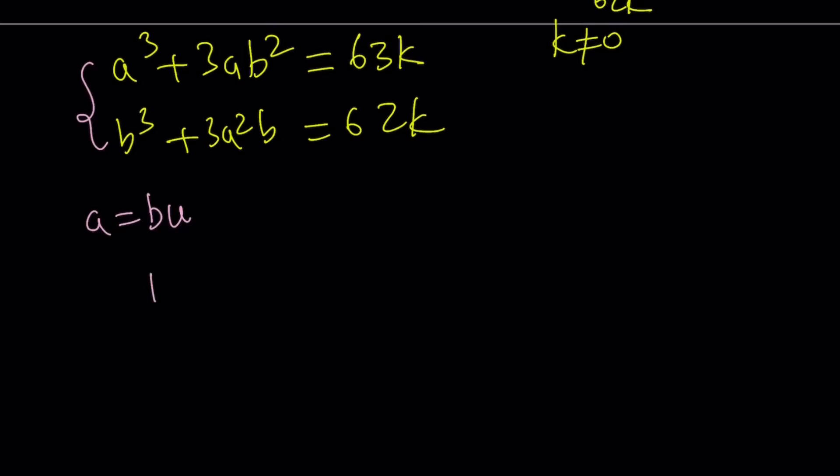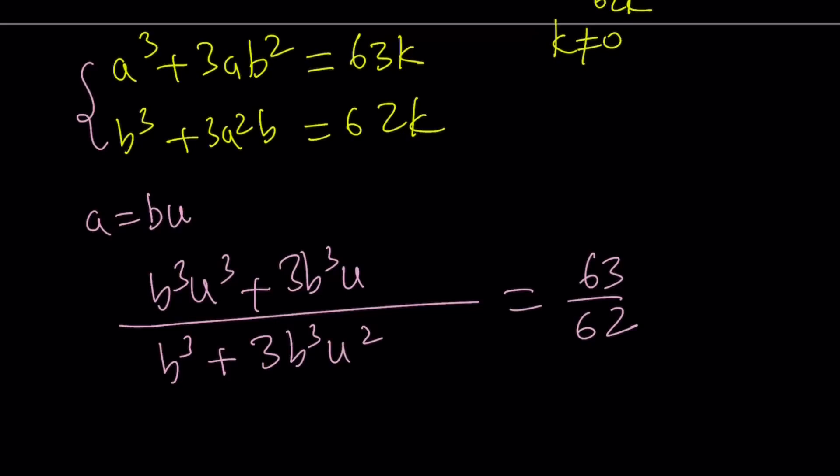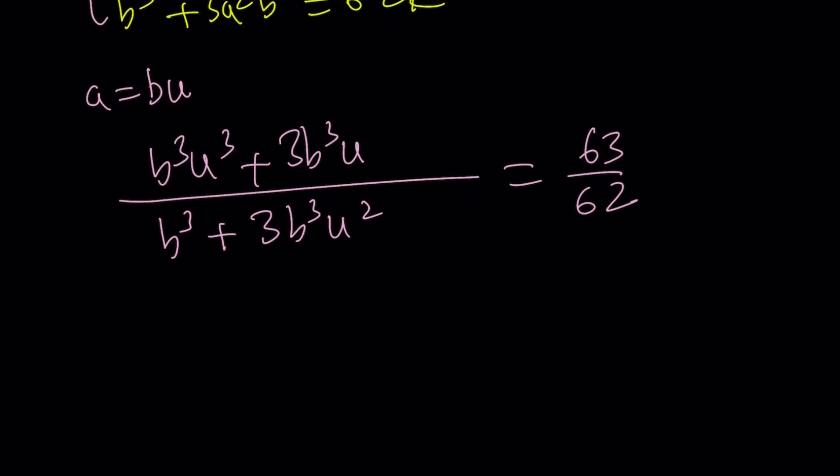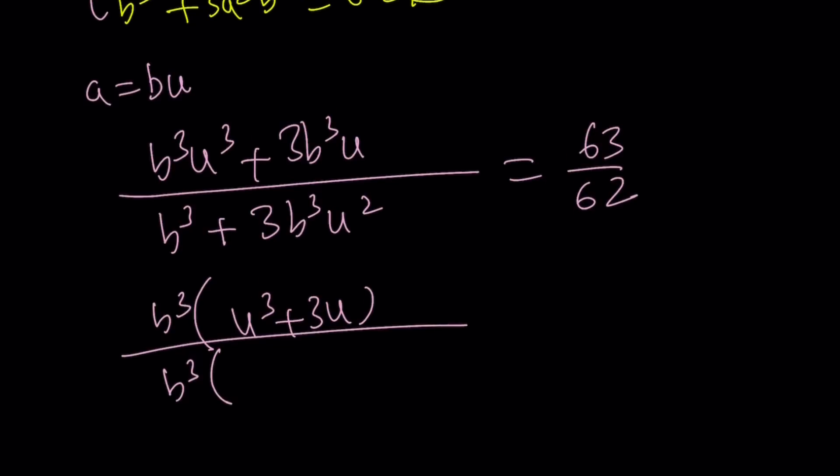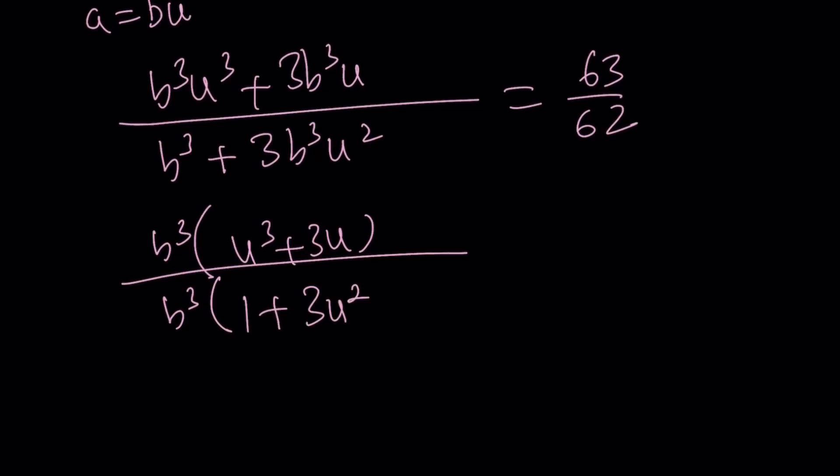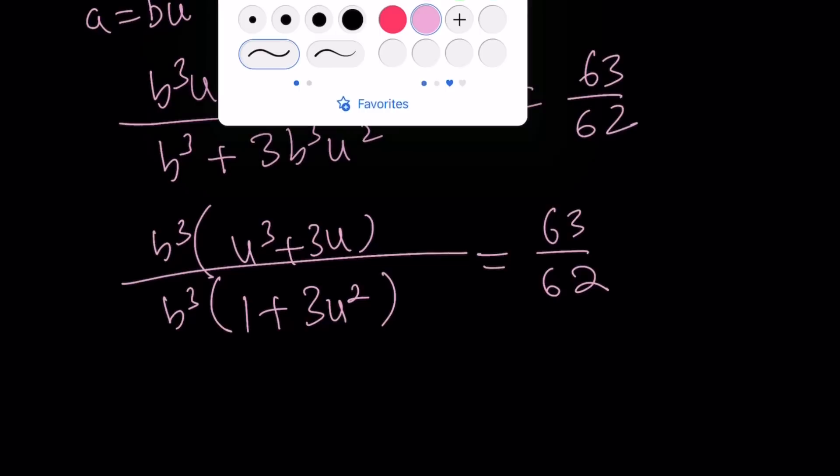Since this is a homogeneous equation, I'm going to go ahead and replace A with BU. So if you do that, you're going to get the following. B cubed U cubed plus 3B cubed U. That's going to be the numerator. And the bottom is just going to be B cubed plus 3A squared B, which can be written as 3B cubed U squared. And obviously that is equal to 63 over 62. Awesome. Now let's go ahead and factor out the B cubed. That's going to give us U cubed plus 3U. And then B cubed. And the bottom, we can do the same thing. 1 plus 3U squared. And that is equal to 63 over 62. Awesome. Now the B cubed cancels out,